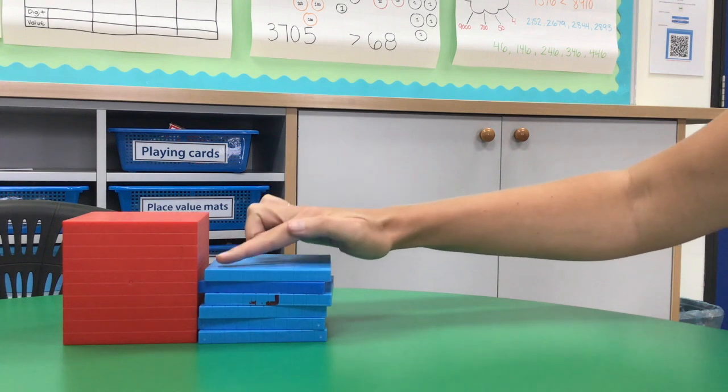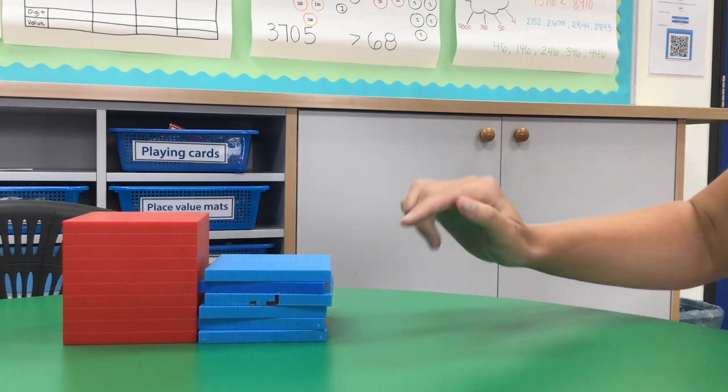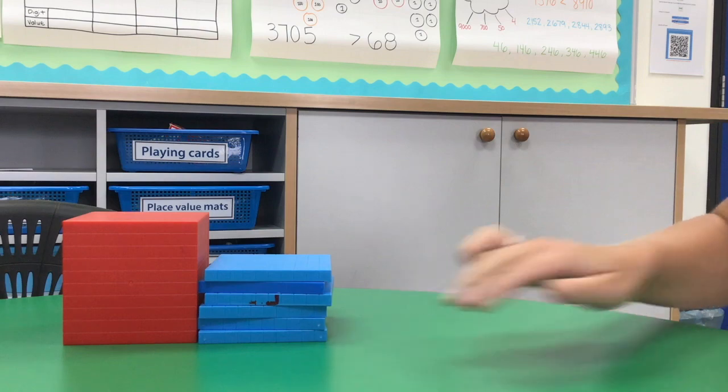If more than half is full, we know that we can round up. If less than half is covered, we round down.